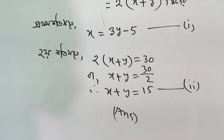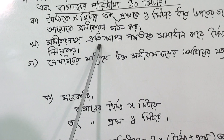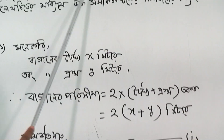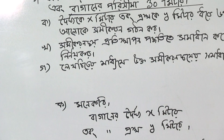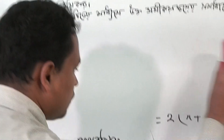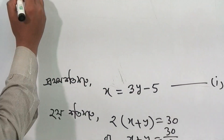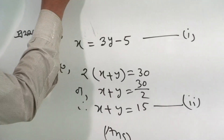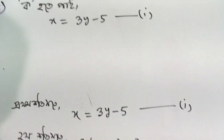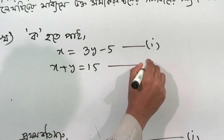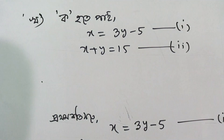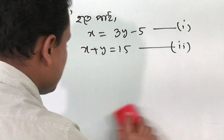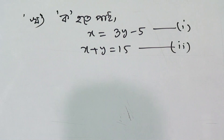Now let's move on. We will solve using the substitution method. To solve by substitution, we first express one variable in terms of the other. From any one of the simultaneous equations, we express one variable and substitute into the other equation.